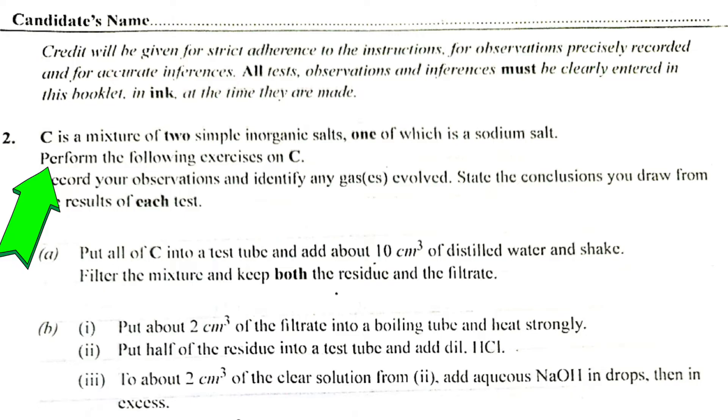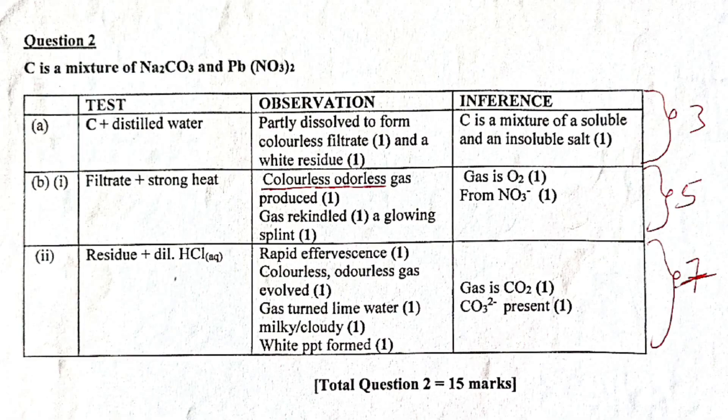C is a mixture of two simple inorganic salts, one of which is a sodium salt. Perform the following exercise on C. Record the observation and identify any gases involved. State the conclusion you draw from the result of each test. Now, A. Put all of C into a test tube and add about 10 cm³ of distilled water. And shake. What they want us to get there is, whether it is soluble or not soluble or partially soluble. Okay. Filter the mixture and keep both the residue and the filtrate. That's A. So let's see the expected answer that we have to get from there.